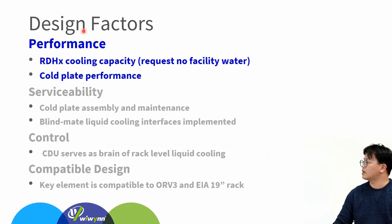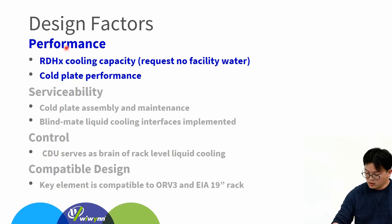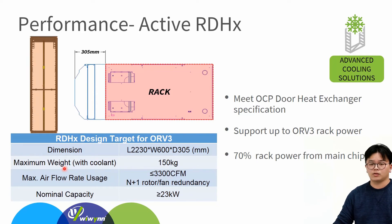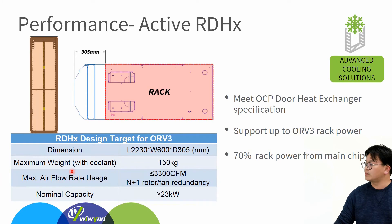I would like to share the design factors and targets we plan to address. First is performance. The cold plate and active rear-door heat exchanger are two key parts in this solution for heat dissipation. The active rear-door heat exchanger mechanical dimensions will follow and meet the OCP heat exchanger spec — you can check the detailed dimensions here. The total weight with cooling will be under 150 kilograms. The current Open Rack V3 power design supports up to 33 or 36 kilowatts per rack, so we must limit maximum airflow usage. To meet the 0.1 CFM per watt design target, airflow usage will be under 3,300 CFM, supporting one fan or one rotor redundancy.